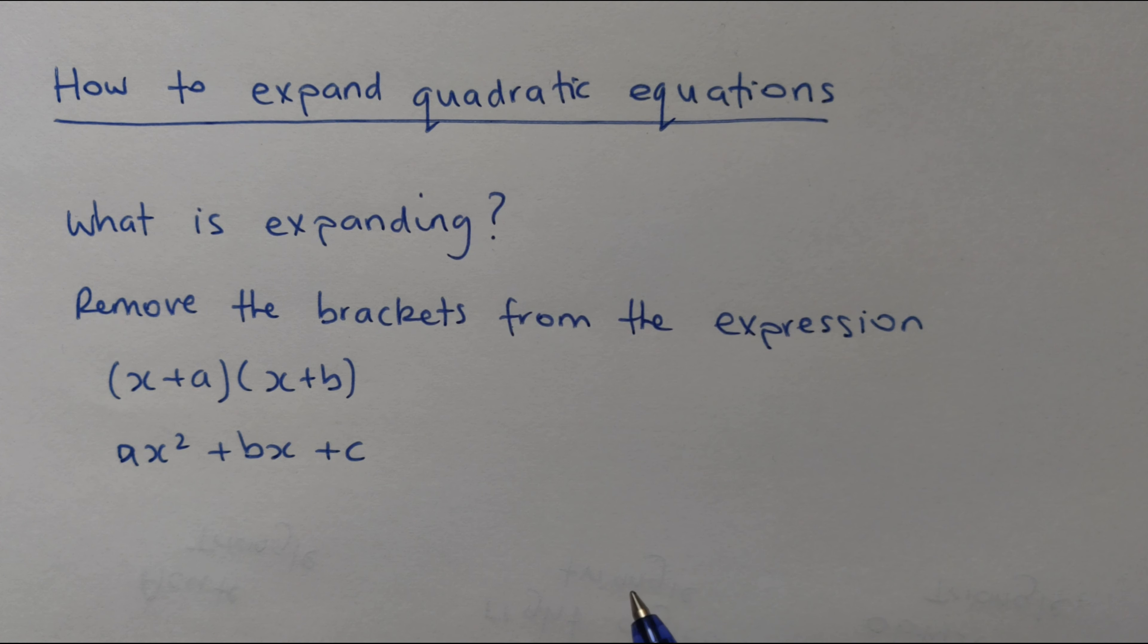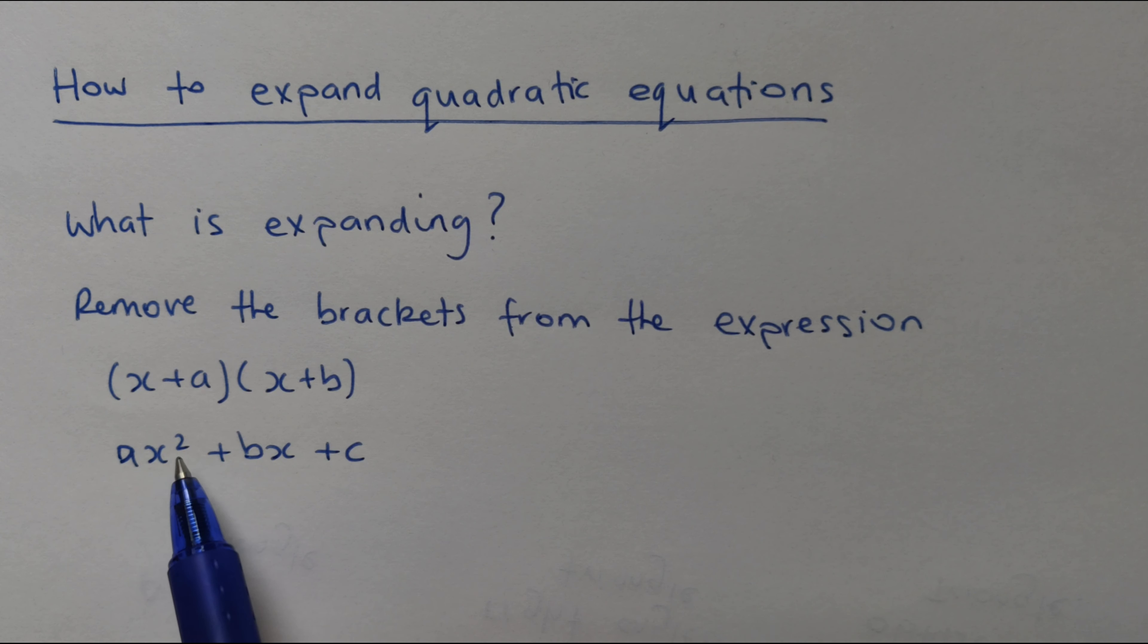So, in factorized form, our quadratic equation is in the form of x plus a, x plus b. And when we expand it, we want to write it in the form of ax squared plus bx plus c. So, how do we do this? Let's work through a few examples.